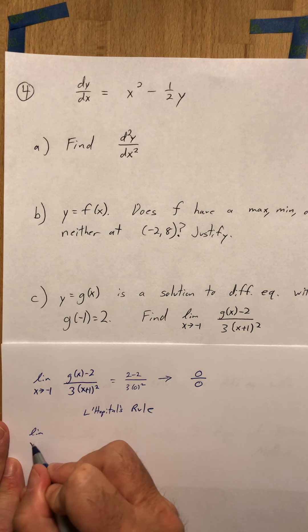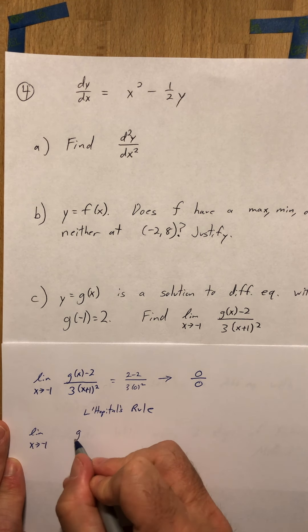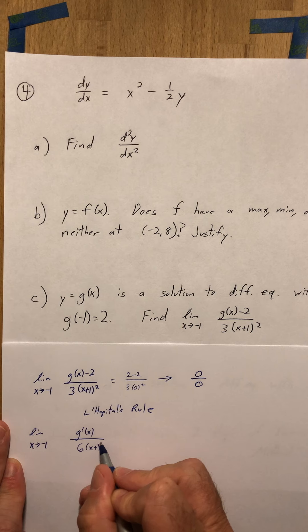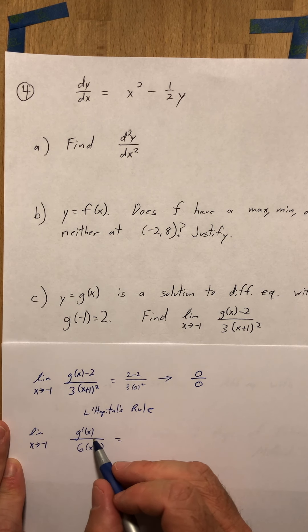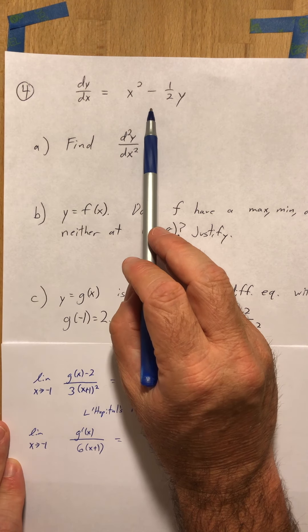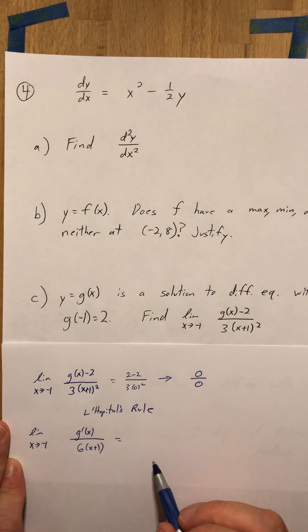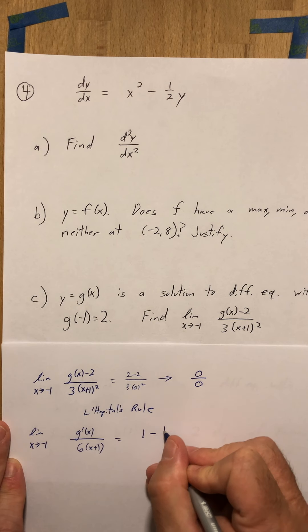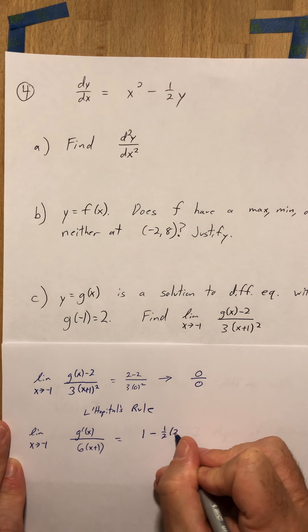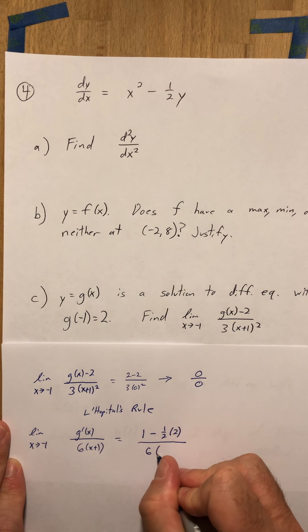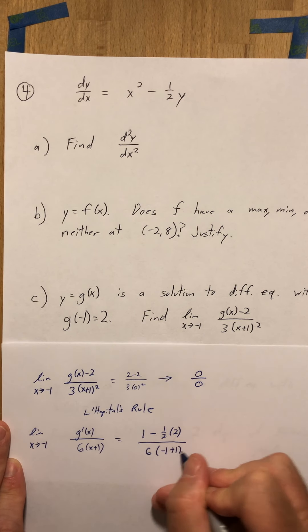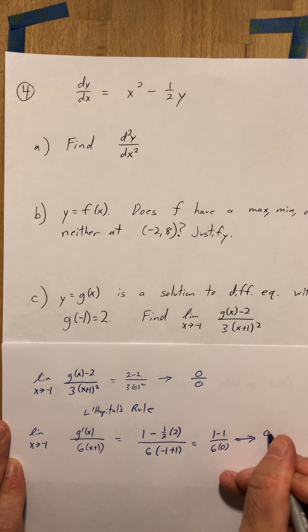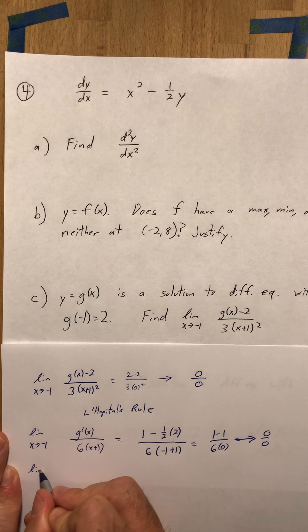Applying L'Hôpital's rule: the limit as x approaches negative 1 of g prime over 6 times x plus 1. g prime is the derivative, so I go back to my differential equation and plug in the point negative 1, 2: that's 1 minus 1 half times 2, over 6 times negative 1 plus 1. I end up with 1 minus 1 over 6 times 0 — still 0 over 0 — so I apply L'Hôpital's rule one more time.